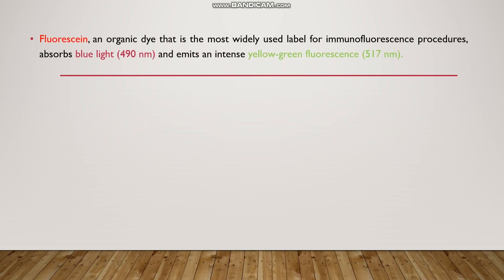Fluorescein is an organic dye that is the most widely used label for immunofluorescence procedures. It absorbs blue light in the range of 490 nm and emits an intense yellow-green fluorescence at 570 nm.